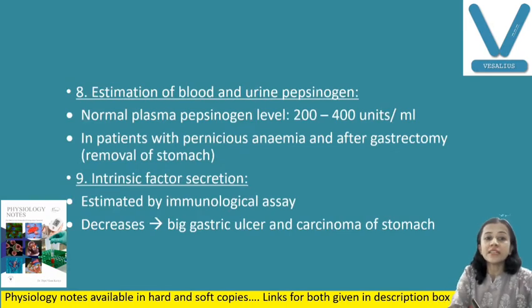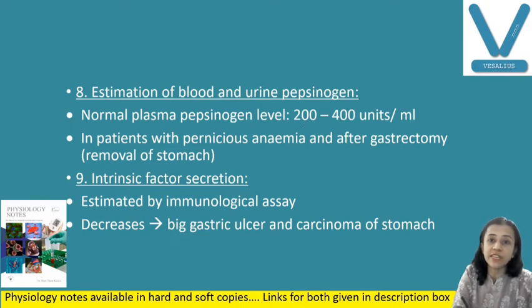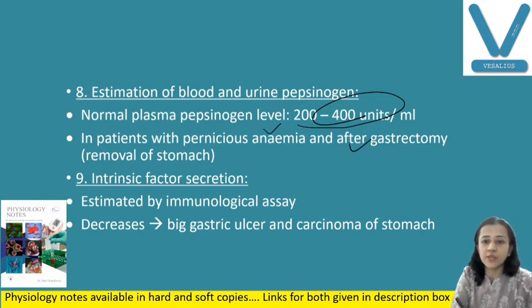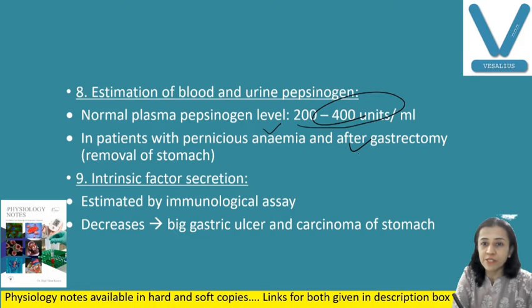Another is estimation of blood and urine pepsinogen. Normal plasma pepsinogen level is 200 to 400 units per ml. Blood and urine pepsinogen decreases in patients with gastrectomy — if the stomach is removed, the chief cells are not there and there is decrease in pepsinogen secretion.